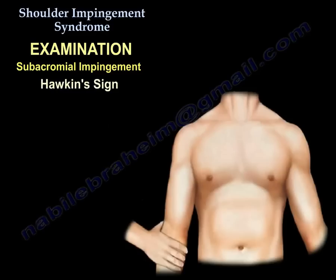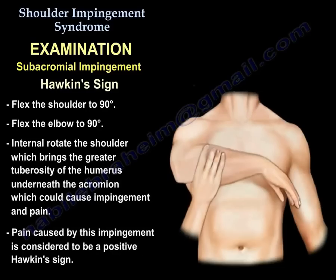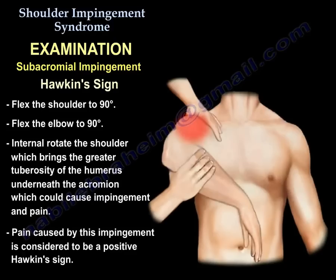The other test is called the Hawkins sign. You flex the shoulder to 90 degrees, flex the elbow to 90 degrees, and internally rotate the shoulder. That brings the greater tuberosity underneath the acromion and leads to impingement and pain. That is a positive Hawkins sign.